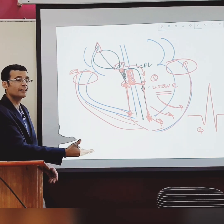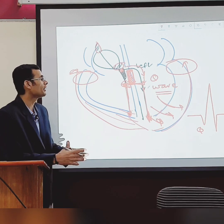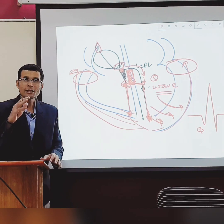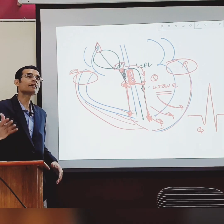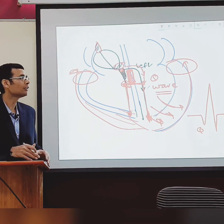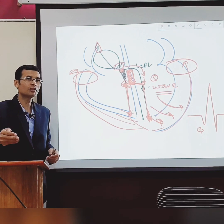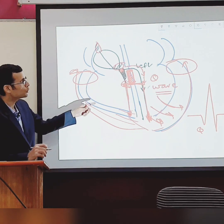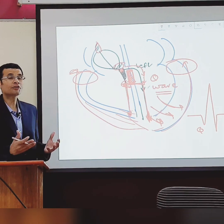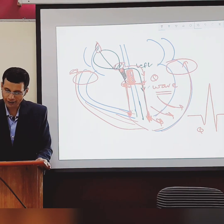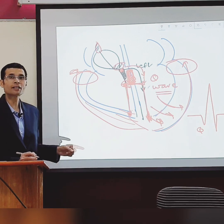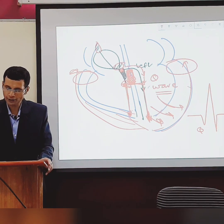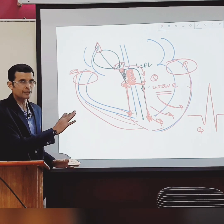The logic behind this is simple. Depolarization leads to contraction — it's the depolarization which travels through the nerve, enters the muscle, and leads to contraction. So imagine if the uppermost part of the interventricular septum were the first to depolarize, since it is at the very starting point of the ventricle.